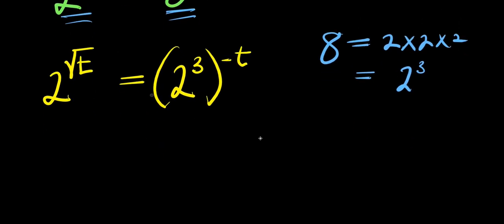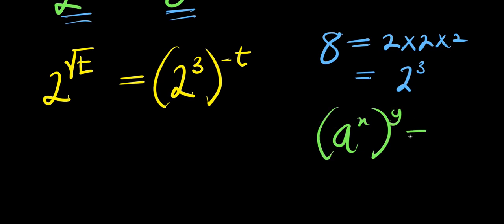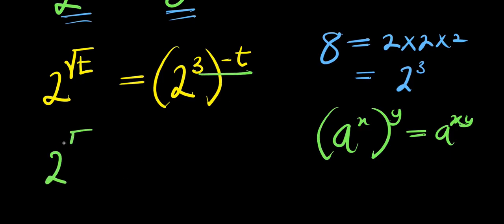Now remember, if you have a to the power x, raised to the power of y, this equals a to the power xy. Applying that here: 3 times negative t is negative 3t. So we have 2 to the power square root of t equals 2 to the power negative 3t.